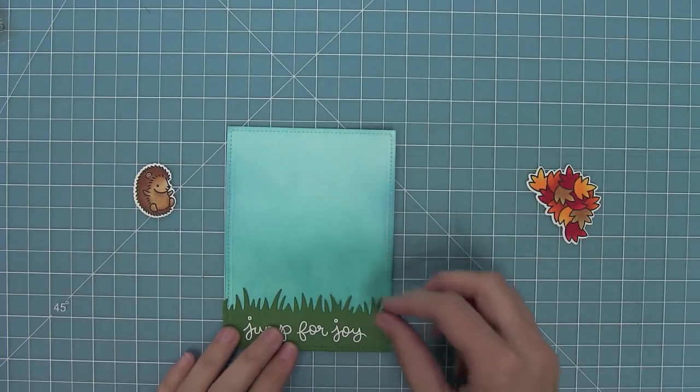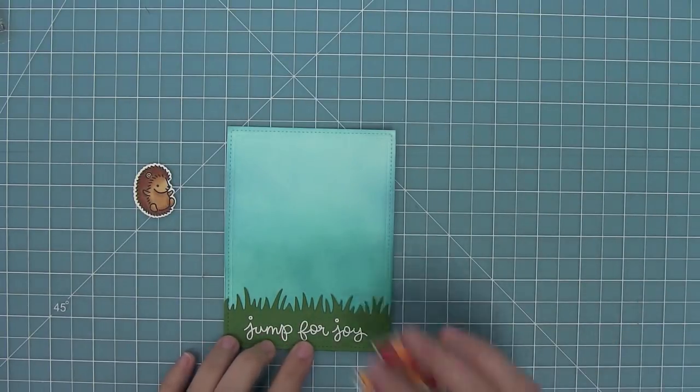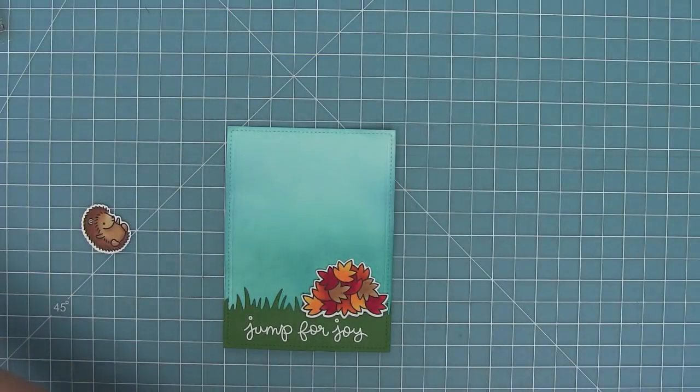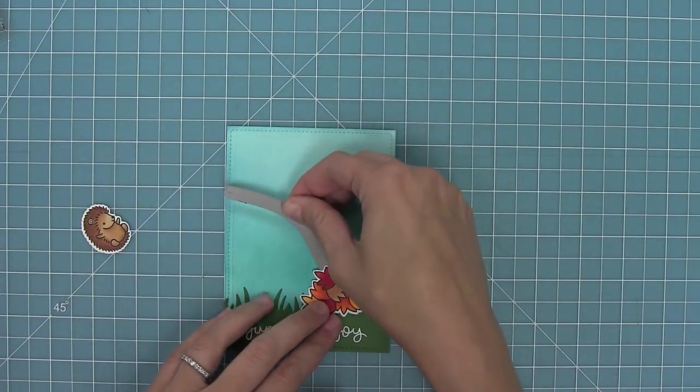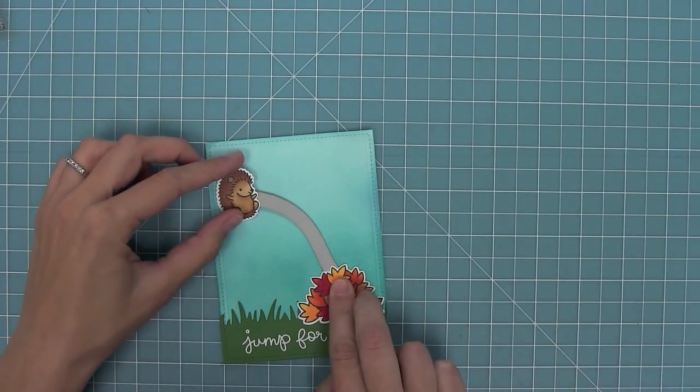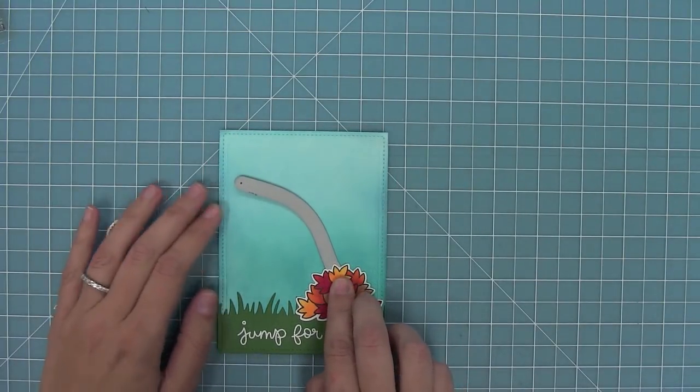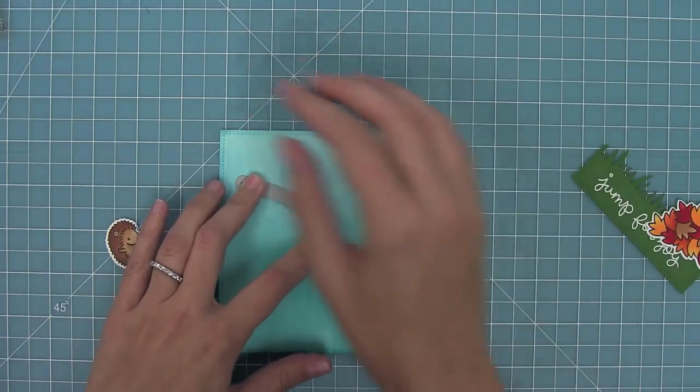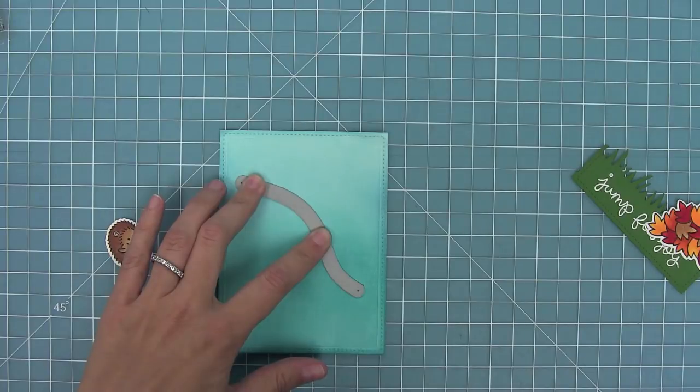Now I need to decide where my slide on over die is going to go. I'm going to put everything in place where I want it to be and that's going to tell me where this die needs to be so that my hedgehog can roll down into these leaves. Once I finally get a good placement I'll use some post-it note tape to hold it in place so I can die cut it in my die cut machine.